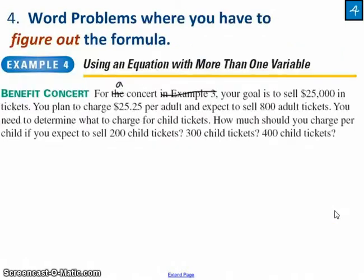Another word problem. But in this case, they haven't given me the formula. I have to figure it out myself. I've rewritten the paragraph that was in example 4 of your textbook because we don't really need example 3 to understand example 4. For a concert, your goal is to sell $25,000 in tickets. I've got to somehow set up a formula. Well wait, there it is. My goal is to sell $25,000 in tickets.